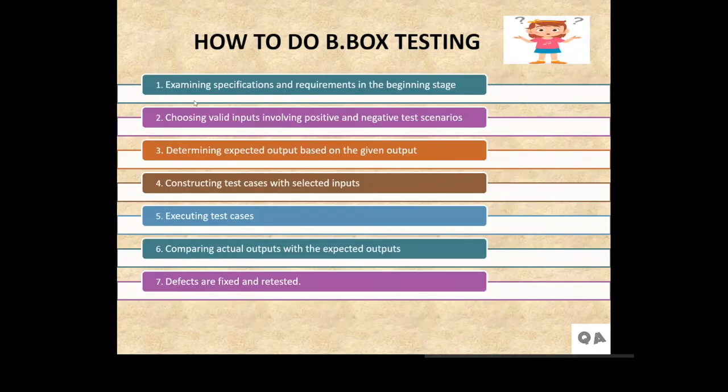How do we do black box testing? There are seven main steps. First is examining specifications and requirements in the beginning stage. It is the very foremost step in black box testing. Then is choosing valid inputs involving positive and negative test scenarios. We create test scenarios that should be either positive test scenarios or negative test scenarios. Then comes the third step, determining expected output based on the given input. Like in the previous diagram, it shows what is the expected output when we give any input to the software.